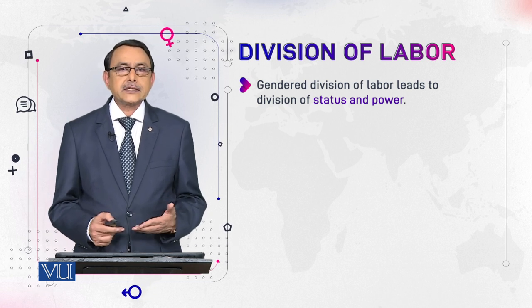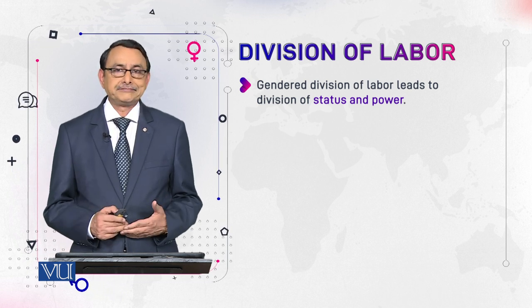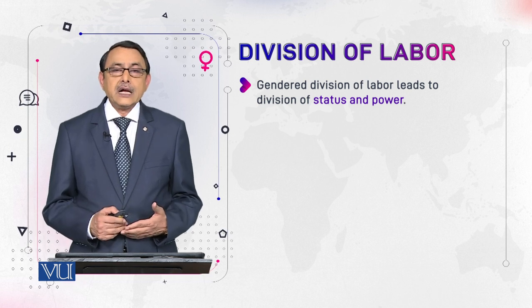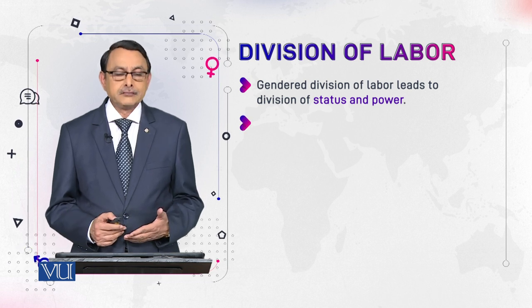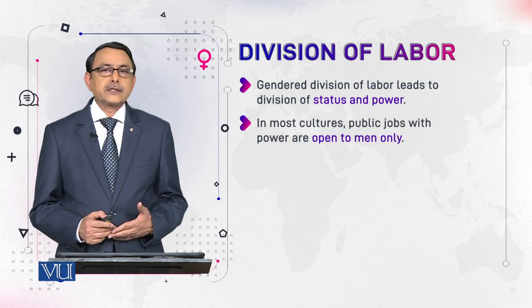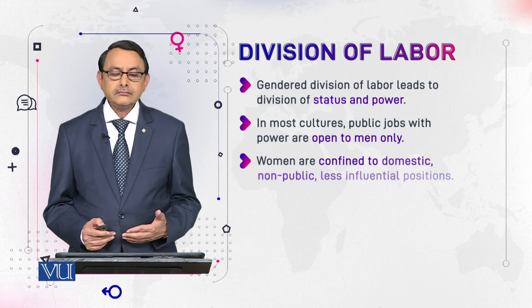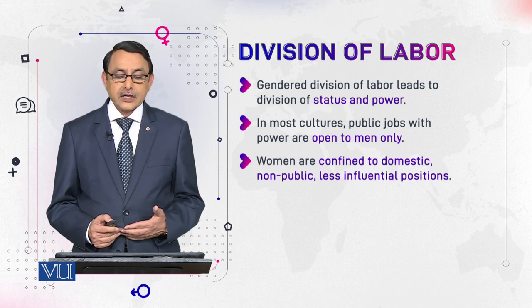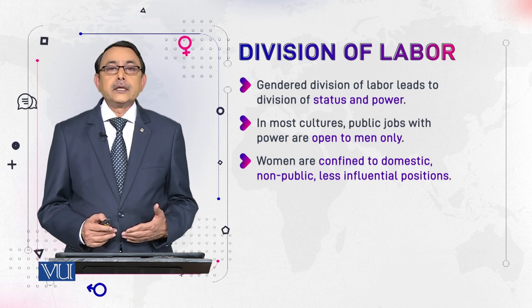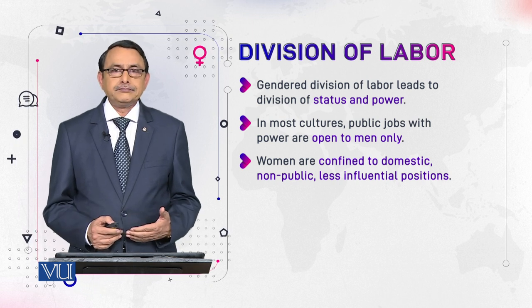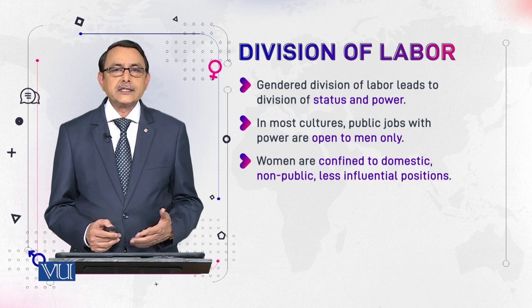This division of labor, based on sexes, leads to division of status and power. This division relates to status and power. In most cultures, public jobs with power are open to men, while women are confined to domestic, non-public, private jobs. As a result, women can't access the public sphere, and the whole public sphere is left to men.